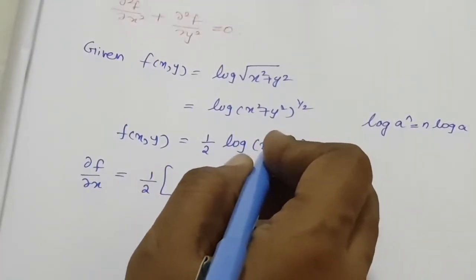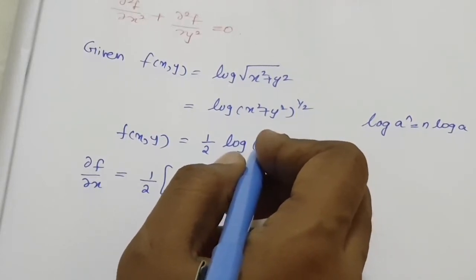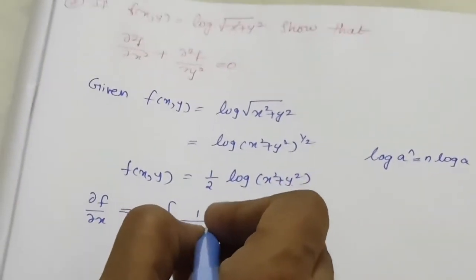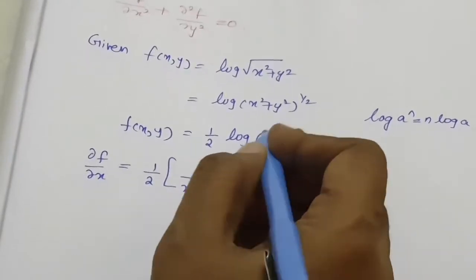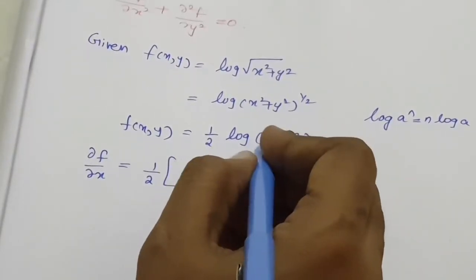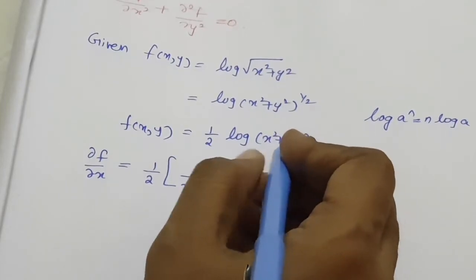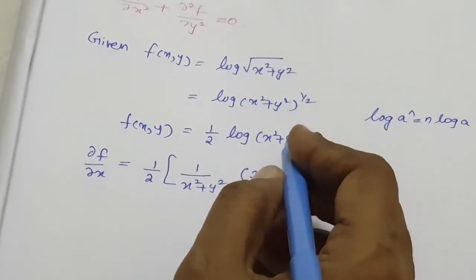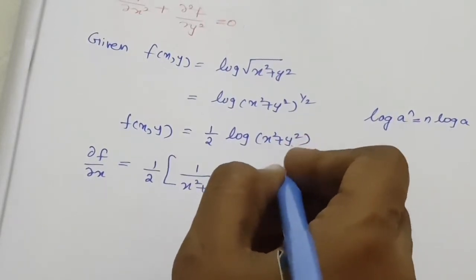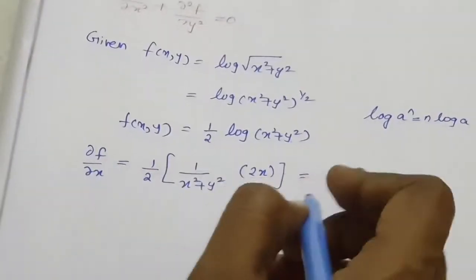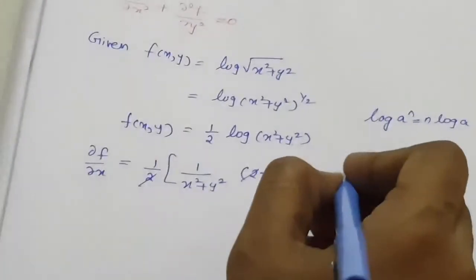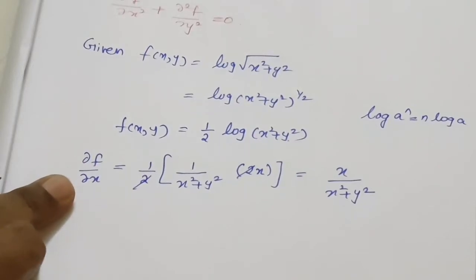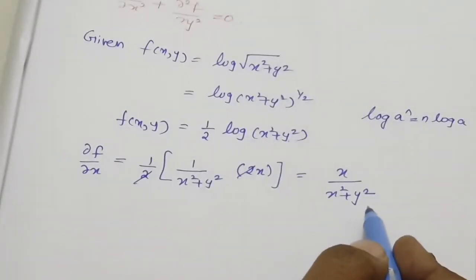Differentiating f with respect to x: the derivative of log(x) is 1/x, so differentiating log(x² + y²) gives 1/(x² + y²). Then we differentiate the bracketed term with respect to x: y is constant so y² differentiates to 0, and x² differentiates to 2x. So ∂f/∂x equals (1/2) × (1/(x² + y²)) × 2x, which simplifies to x/(x² + y²).